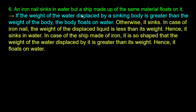If the weight of the water displaced by a body is greater than the weight of the body, the body floats; otherwise it sinks. In the case of an iron nail, the weight of the displaced liquid is less than its weight, hence it sinks. In the case of a ship made of iron, it is shaped so that the weight of the water displaced is greater than its weight, hence it floats.